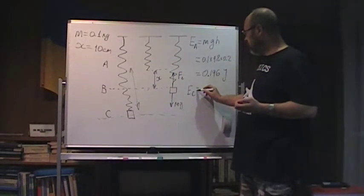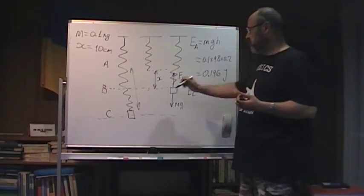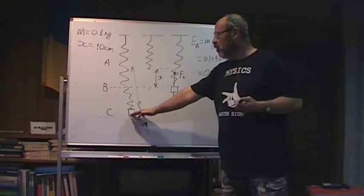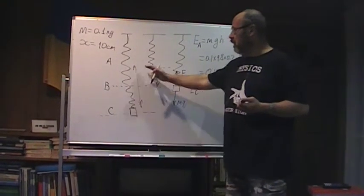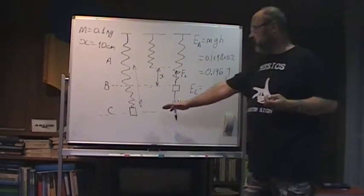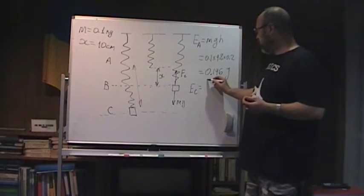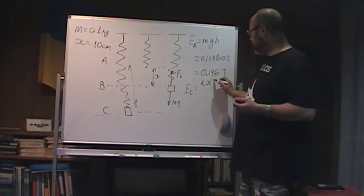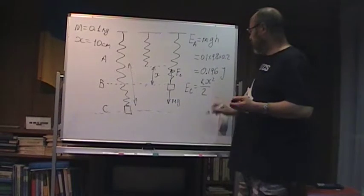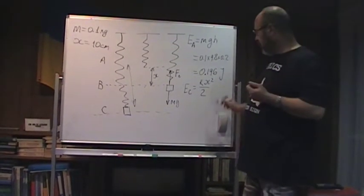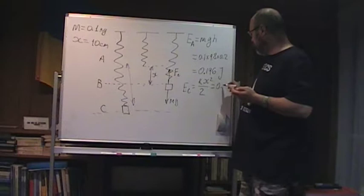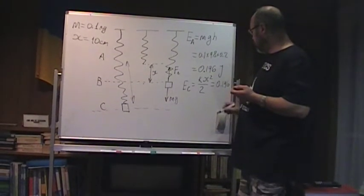So energy at C equals, sorry, just energy of the stretched spring. There is zero kinetic energy there. So we have Kx squared over 2, and it has to be equal 0.196 J.